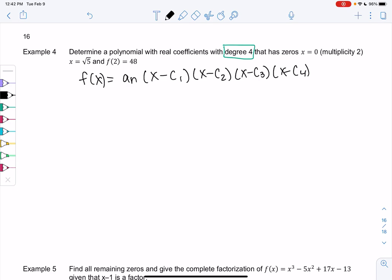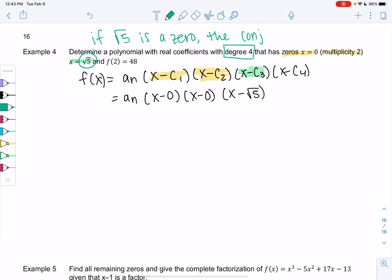And then we have x equals 0 is a zero, and it has multiplicity 2. So that means two of these are going to become zero. So a_n times x minus 0 times x minus 0. So 0 is a zero. And then square root of 5 is also a zero, so we'll put that for c₃. And then we'll try to figure out the coefficient later, the a_n. So we'll use f of 2 equals negative 48 at the end.